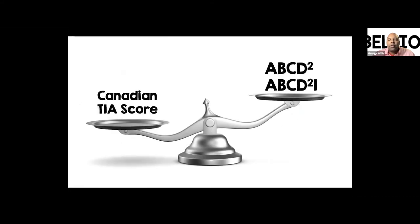How does the Canadian TIA score compare to ABCD2 and ABCD2I? The Canadian TIA score did a better job of evaluating low-risk patients and potentially getting them out of the hospital. The ABCD2 and ABCD2I were not able to identify any low-risk patients at all — all patients in this validation study fell into medium or high risk categories under those scoring systems.